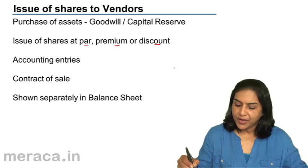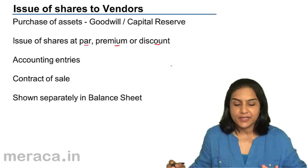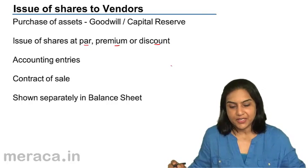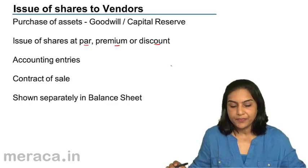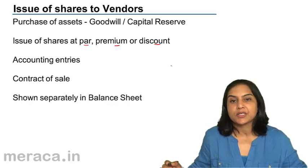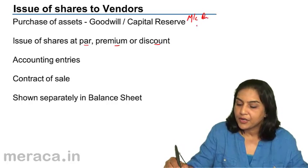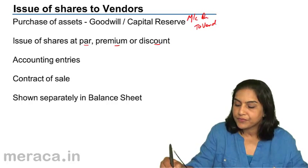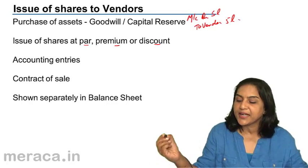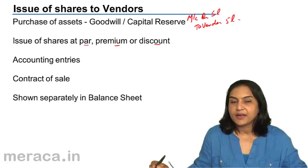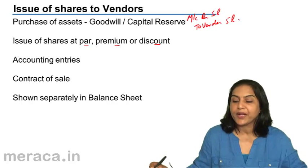The accounting entries would actually be of two kinds. One is for the purchase of assets. When assets are purchased, suppose I purchase machinery — the entry would be machinery account debit to vendor account. Let us say the machinery is for 5 lakhs and we've decided to pay the vendor 5 lakhs; it would be machinery account debit to vendor 5 lakhs.